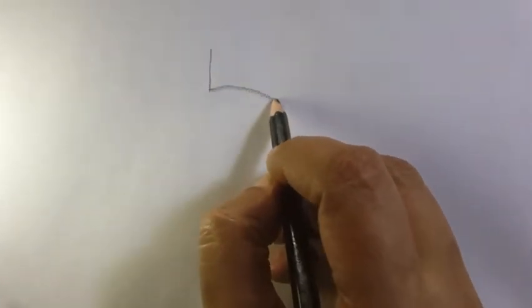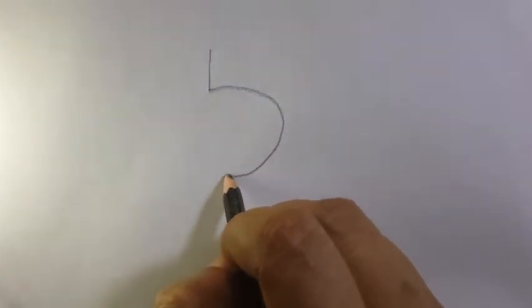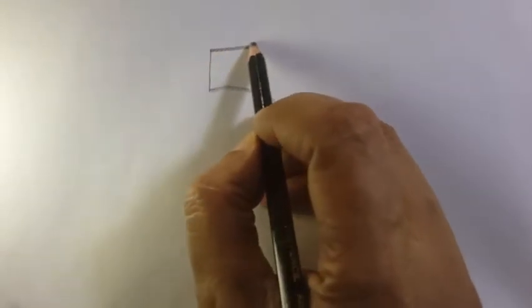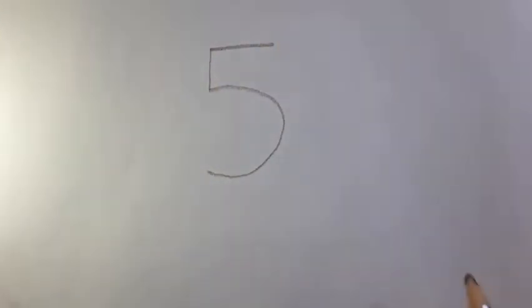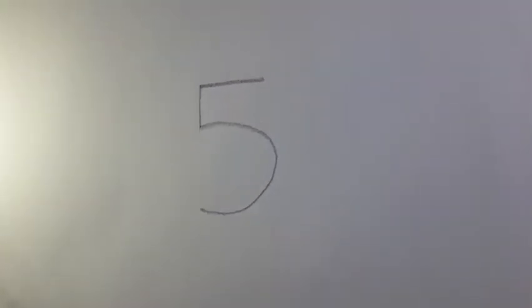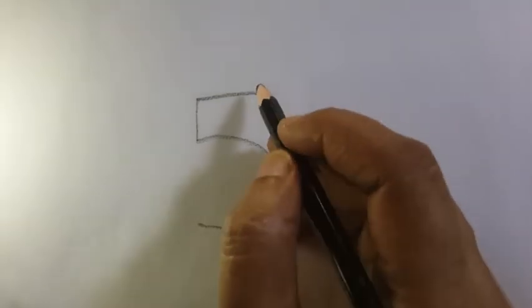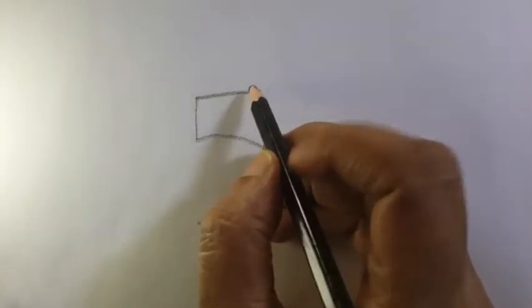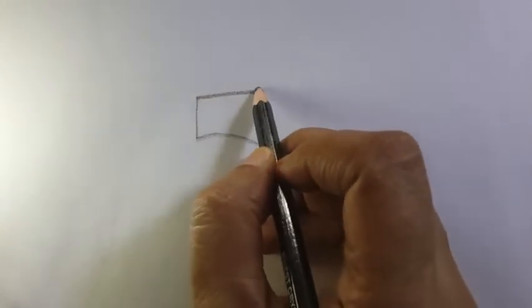Today's number is number 5. First, let's draw number 5. I'm drawing number 5 now. This is our number 5. Now I'm going to draw a picture — today I'm going to draw a bird, a crow.